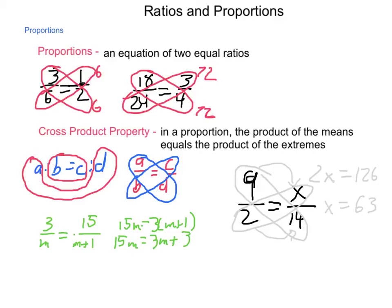Division property of equality, allows us to have m equals 3 twelfths. Now, applying proportions, or simplifying this ratio, we get 1 fourth. So, 3 over 1 fourth is equal to 15 over 1 fourth plus 1.